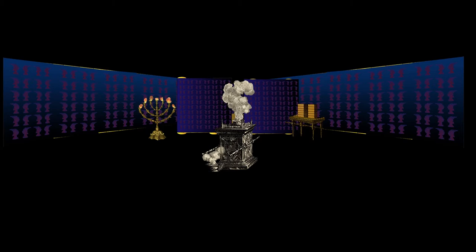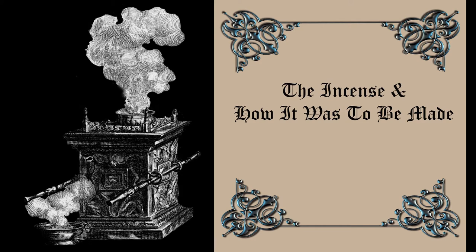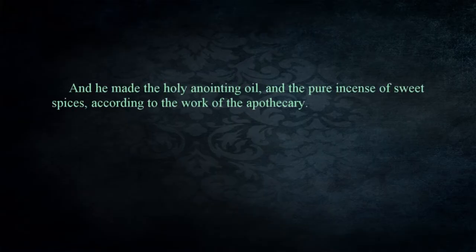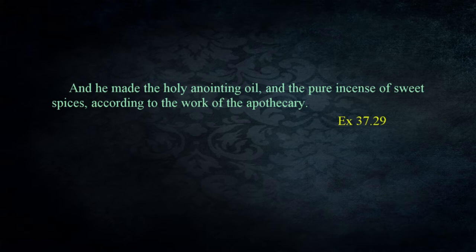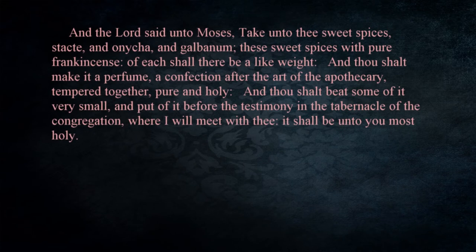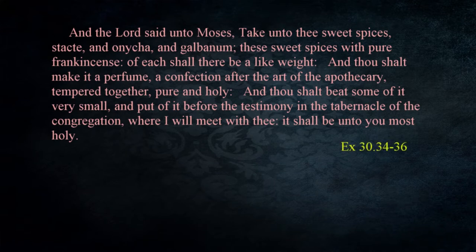Now let's take a look at how the incense was made and used. We have a summary of Bezaleel making the incense as he fabricated items for the tabernacle: 'He made the holy anointing oil and the pure incense of sweet spices according to the work of the apothecary' — Exodus 37:29. We find a list of specific spices to be used in the incense as God gave Moses instructions for making it: 'Take unto thee sweet spices — stacti and onycha and galbanum — these sweet spices with pure frankincense; of each shall there be a like weight. And thou shalt make it a perfume, a confection after the art of the apothecary, tempered together, pure and holy. And thou shalt beat some of it very small and put of it before the testimony in the tabernacle of the congregation where I will meet with thee; it shall be unto you most holy' — Exodus 30:34-36.